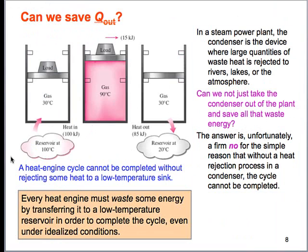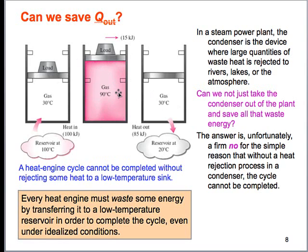The question comes up: can we save Q out? The answer is no. Let's say we have a piston that can move up and down — we heat up this gas chamber. Remember from the ideal gas law, pressure and volume increase as temperature increases, so we can extract, say, 15 kilojoules of work. But in order to complete this cycle and repeat this process, we have to remove heat from the system. Otherwise it's stuck in that state and there's nothing we can do. So by definition, we need to transfer heat to a low-temperature reservoir in all cases for a heat engine.